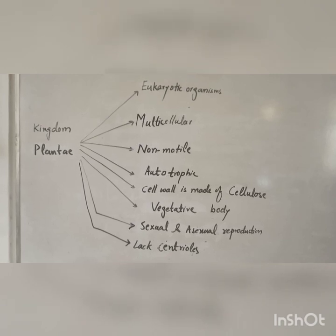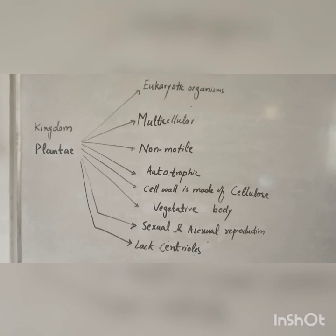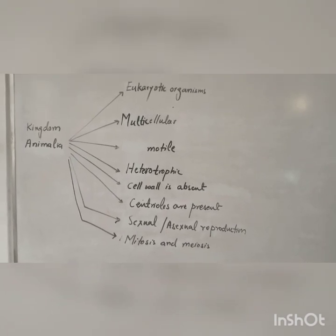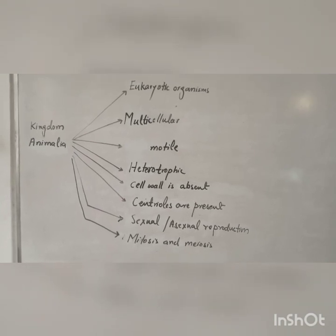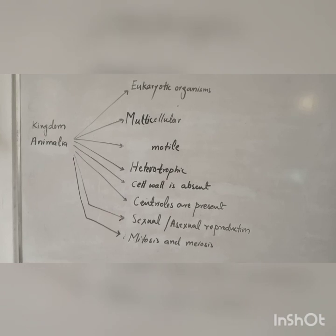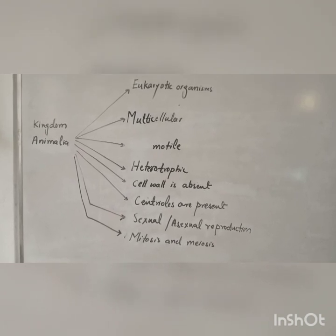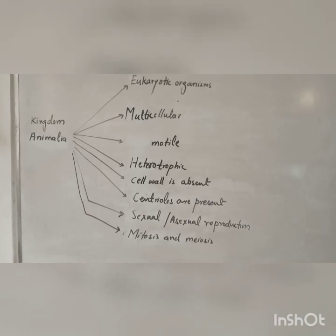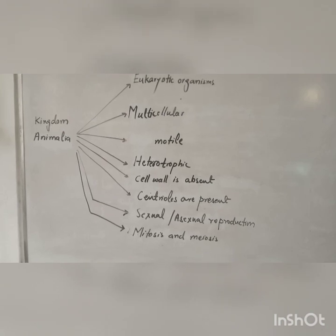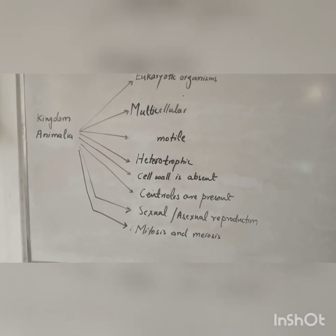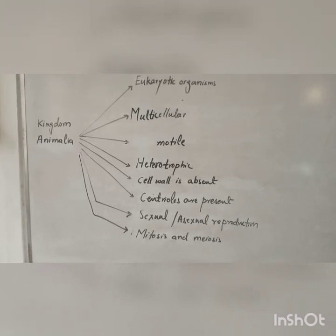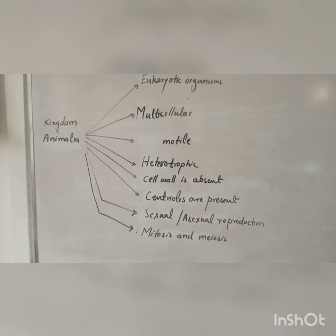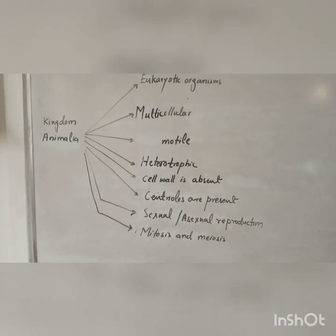During cell division in Kingdom Plantae, cytokinesis occurs with the help of a cell plate. The fifth kingdom is Kingdom Animalia, which includes eukaryotic and multicellular organisms. They are aquatic or terrestrial, motile, and have a heterotrophic mode of nutrition. Their bodies obtain nutrients by ingesting and digesting food. The cell wall is absent while centrioles are present. Sexual or asexual reproduction takes place, and cell division occurs through mitosis and meiosis.